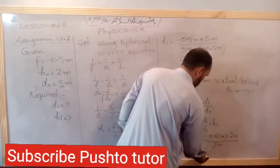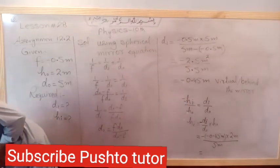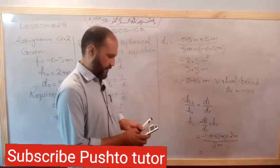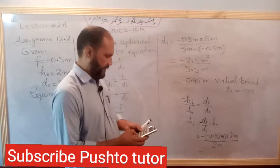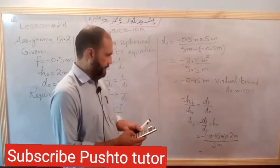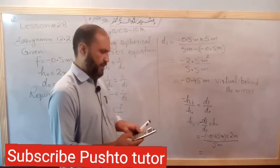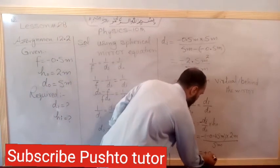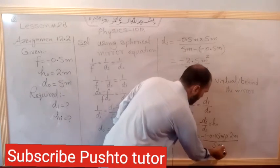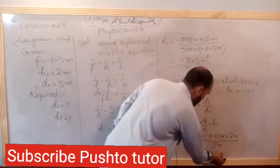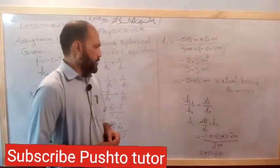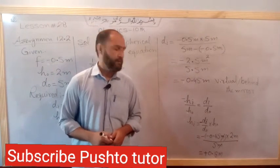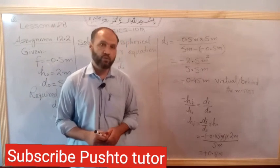Negative negative gives positive sign. 0.45 multiplied by 2 divided by 5 equals 0.18 meters. Plus 0.18 meters - positive sign means the height of image is positive, which means upright.